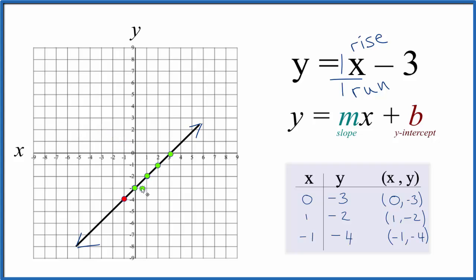Likewise, we could go in the opposite direction. We could go down 1 and then over 1 to the left. Again, from there, down 1, over 1 to the left. And again, all these points are on the line y equals x minus 3.